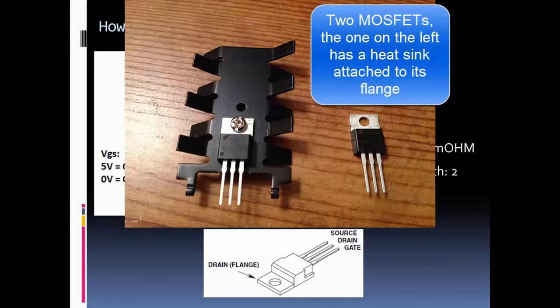MOSFETs are fundamental components in the design and implementation of digital logic gates, forming the building blocks of digital circuits. Digital logic gates process binary information — zeros and ones — and MOSFETs are particularly well-suited for this role due to their ability to act as electronic switches. CMOS technology, incorporating both N-type and P-type MOSFETs, provides a good balance between low-power consumption and high noise margins, making it popular in digital integrated circuits.